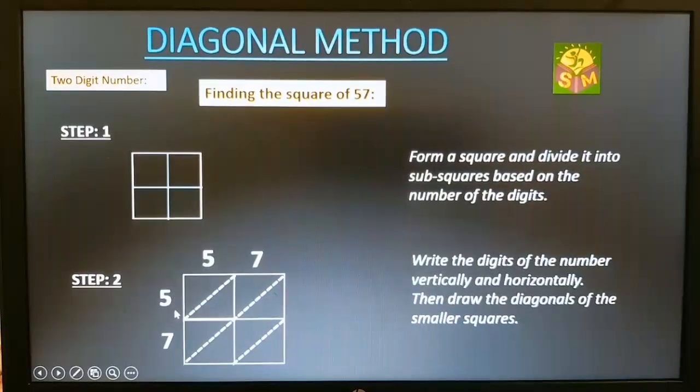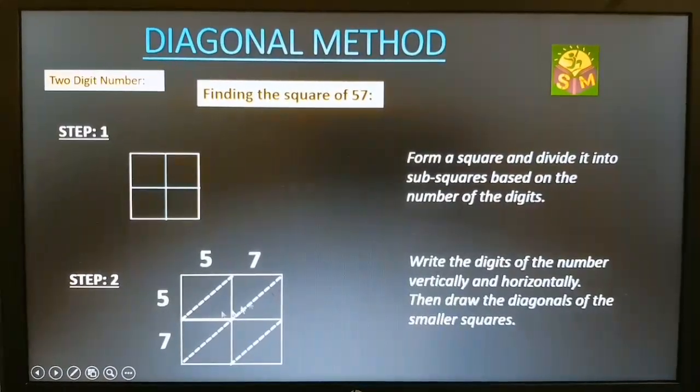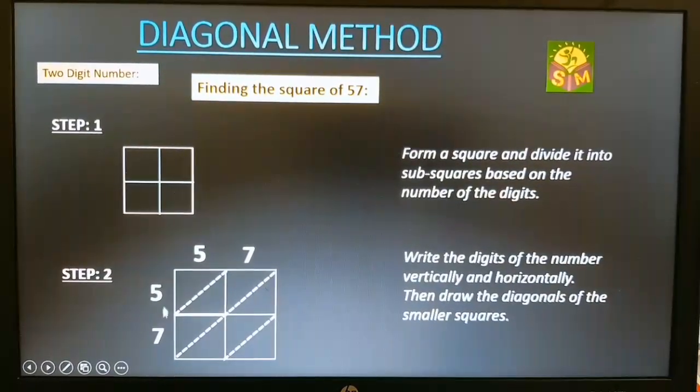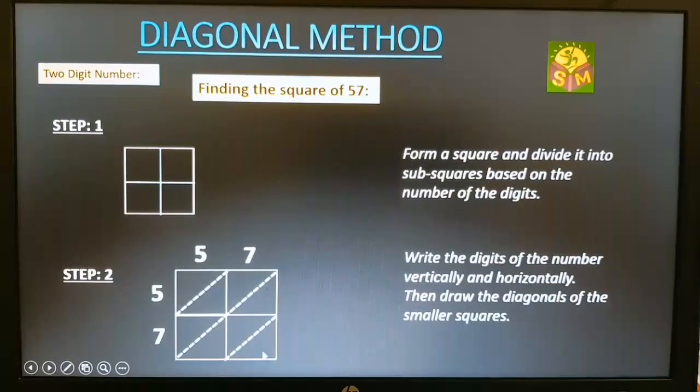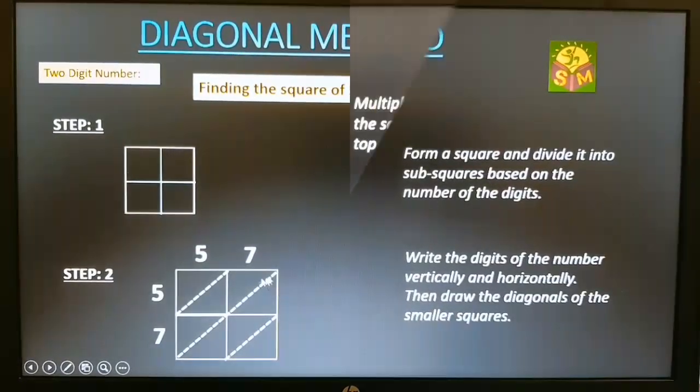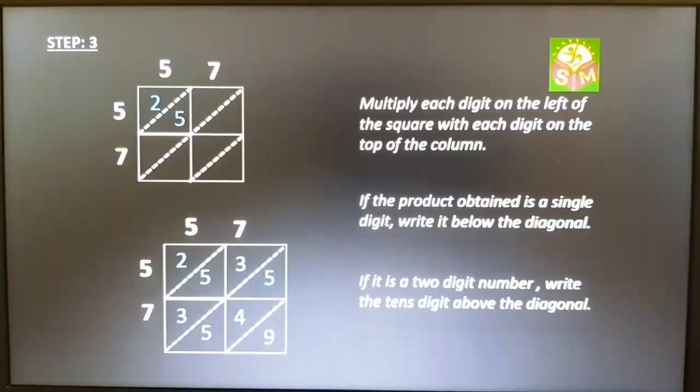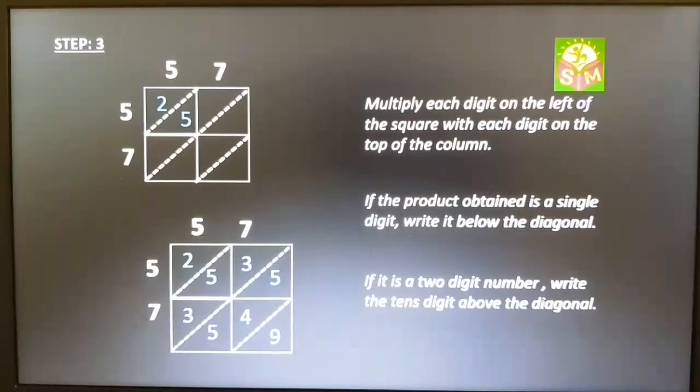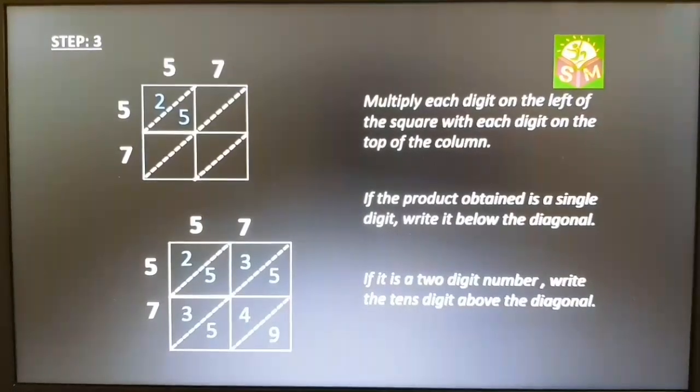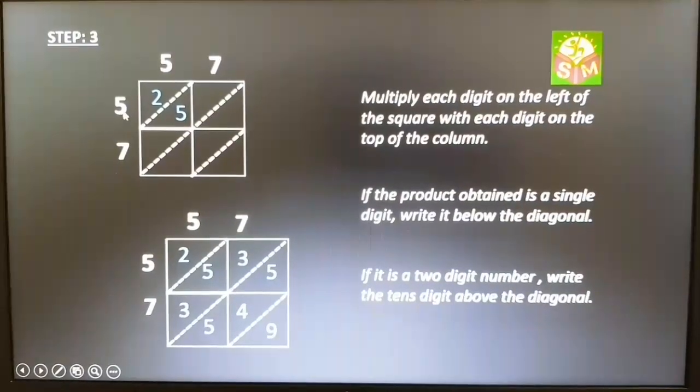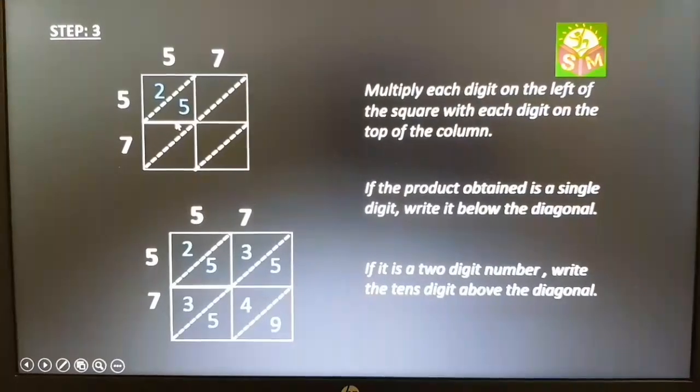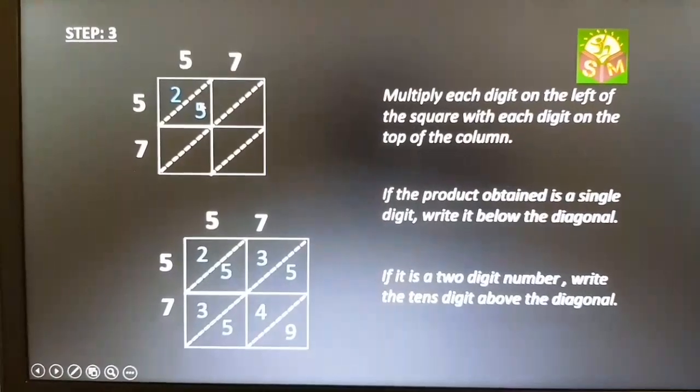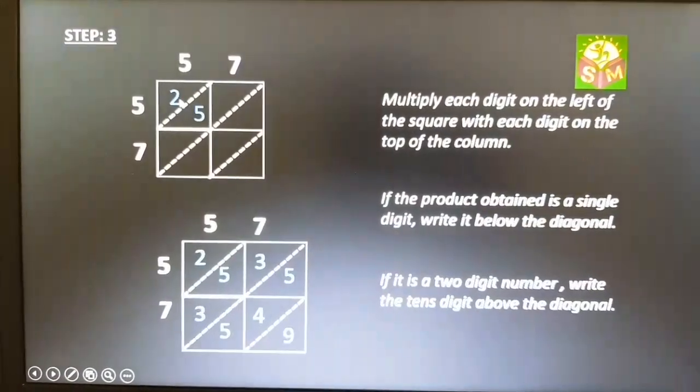Step 2: Write the digits of the number vertically and horizontally as shown in the figure. Step 3: Multiply each digit on the left of the square with each digit on the top of the column. If the product obtained is a single digit, write it below the diagonal. If it is a two-digit number, write the tens digit above the diagonal.